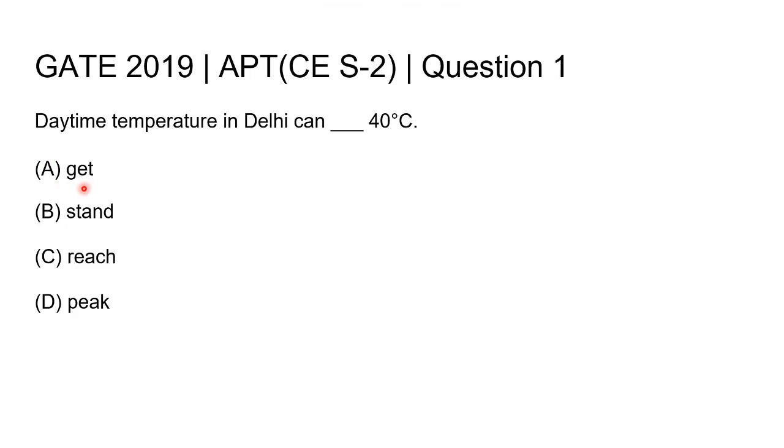Option A is 'get', option B is 'stand', option C is 'reach', and option D is 'peak'.